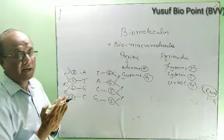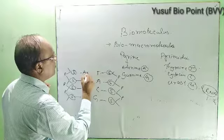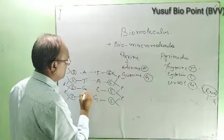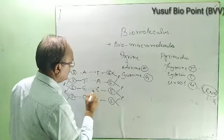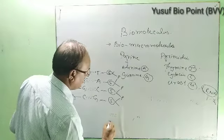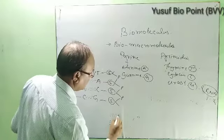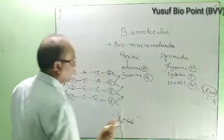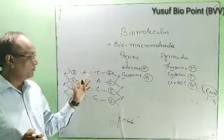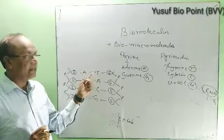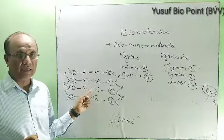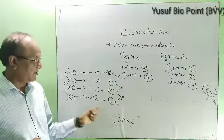The bases on the two sides are attached to each other by hydrogen bonds. Hydrogen bonds are shown by dot structures. Between adenine and thymine, two hydrogen bonds are found. Between guanine and cytosine, three hydrogen bonds are found.